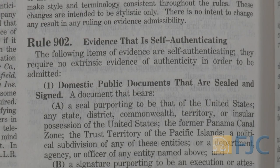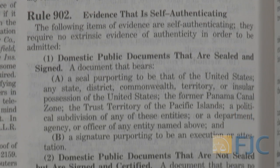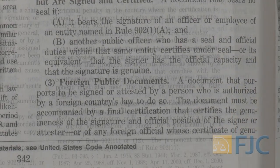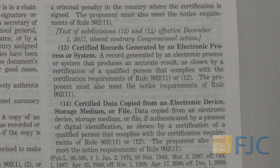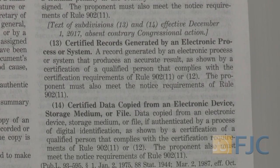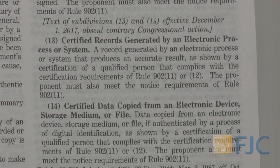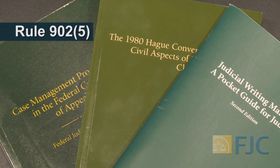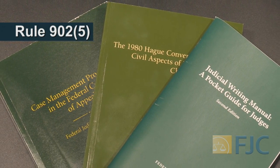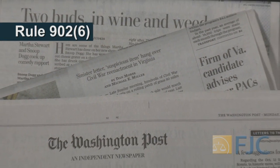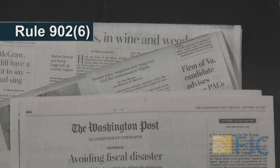Federal Rule of Evidence 902 has for years listed 12 types of self-authenticating evidence. Sections 13 and 14, effective as of December 1, 2017, deal with the self-authentication of electronic evidence. Self-authenticating evidence previously listed in Rule 902 included official publications under Rule 902 Section 5 and newspapers and periodicals under Rule 902 Section 6.